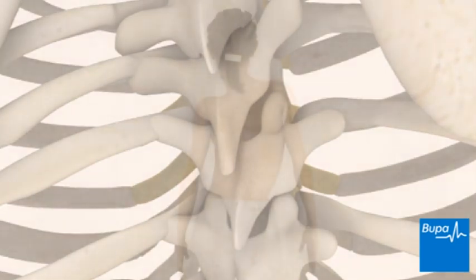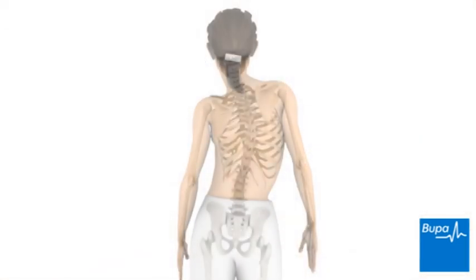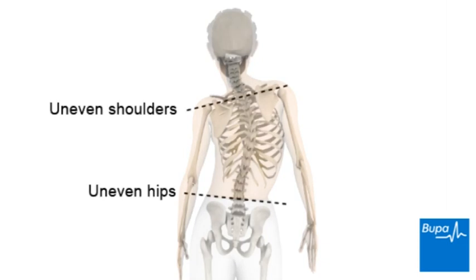If you have scoliosis, you may have one shoulder blade higher than the other, or it may be more prominent. Your hip may also be higher on one side. Here we show one shoulder blade higher than the other, and a hip that is higher on one side.